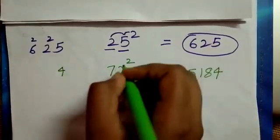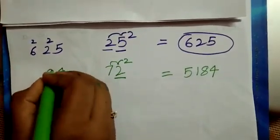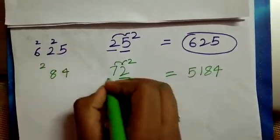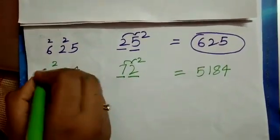2 2's are 4, 4 7's are 28, 8 2 carry over. 7 7's are 49, 49 plus 2 is equal to 51.